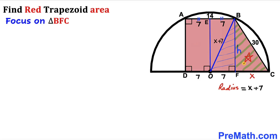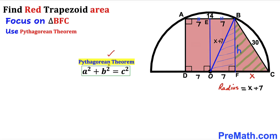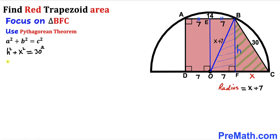Focusing on right triangle BFC with side lengths h, 30, and X, we apply the Pythagorean theorem. The hypotenuse is 30, so h² + X² = 30², which simplifies to h² + X² = 900. Moving X² to the right: h² = 900 − X². Label this Equation 1.